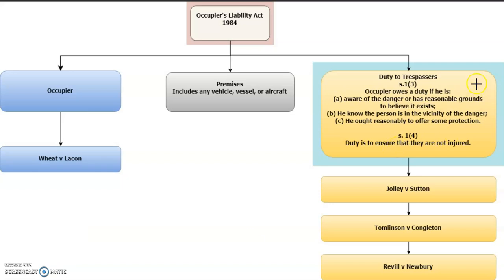Since the Occupier's Liability Act 1984 applies to trespassers, a lower level of protection is offered compared to under the 1957 Act. Death and personal injury are the only protected forms of damage that can be claimed for under this Act. Unlike the 1957 Act, an occupier is not going to be liable for damage to a trespasser's property — so if a trespasser breaks a watch, they won't be able to claim for that under the 1984 Act. Whereas if a lawful visitor sustained damage to a watch because of the state of the premises, they could potentially claim for that under the 1957 Act.